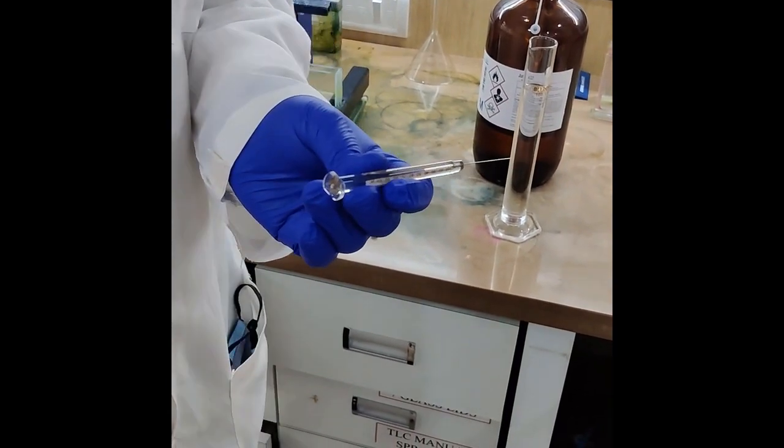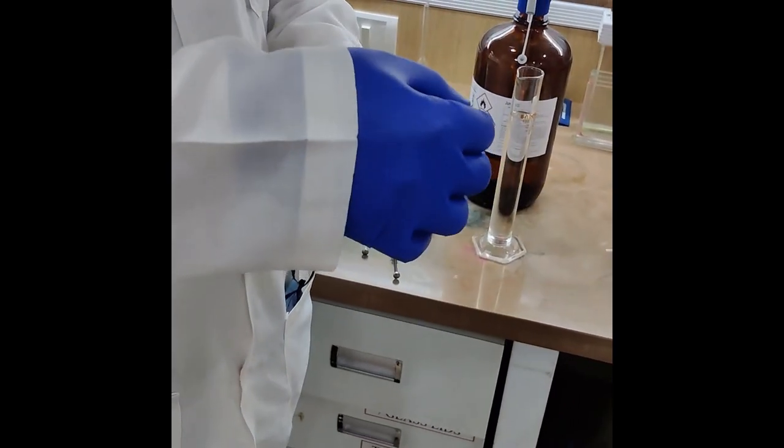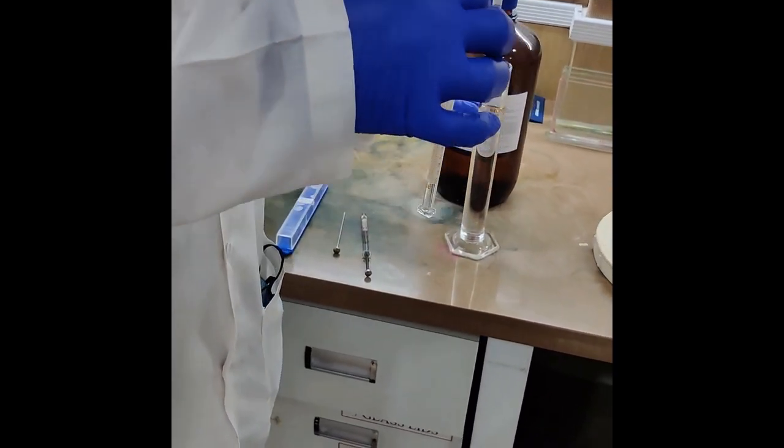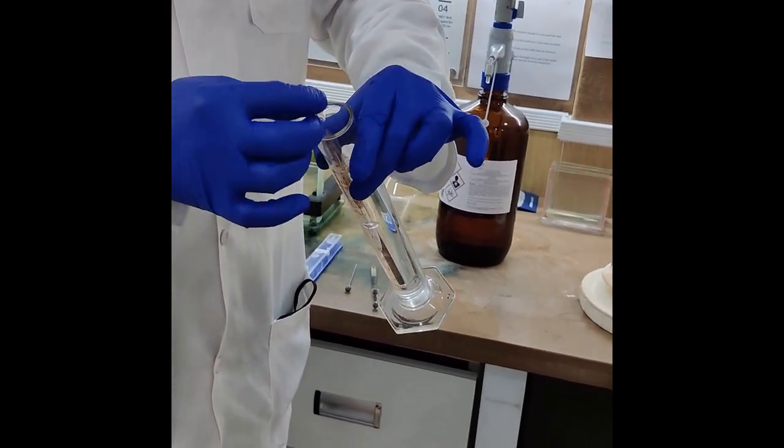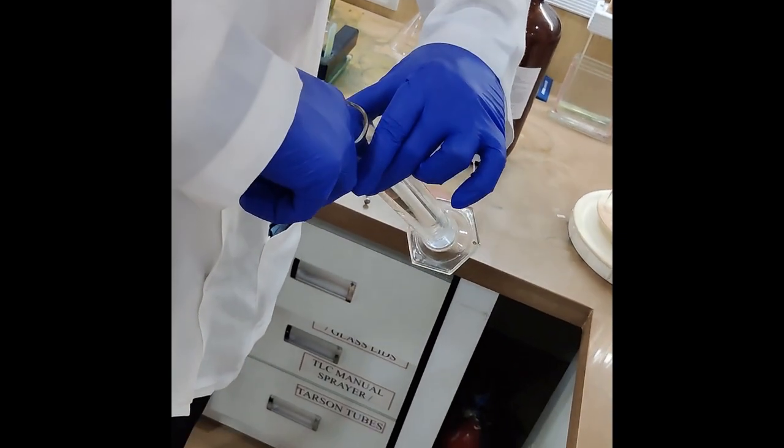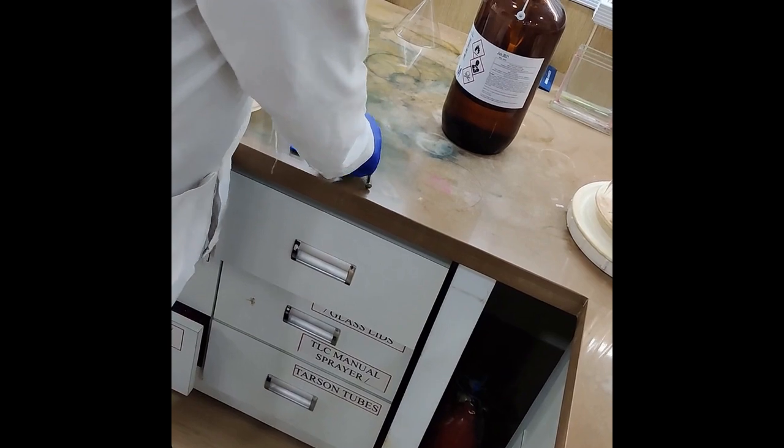Now hold this syringe with the needle tip and carefully tilt the measuring cylinder and place the syringe slowly till it reaches the bottom of the measuring cylinder. Once this is done, also place the piston of the syringe inside the measuring cylinder.